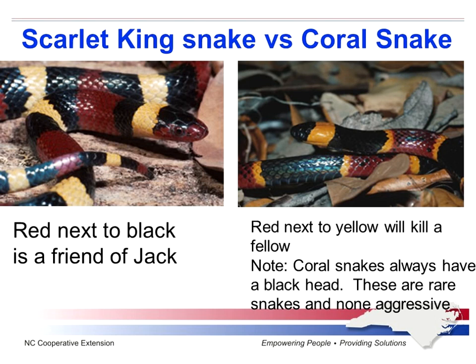We actually wouldn't want anyone to kill this snake, even though it will kill you. It's a very non-aggressive snake. Look at the coloration, because the kingsnake is mimicking the coral snake. If you look, you'll see that red bands are always next to black bands with the kingsnake. With the coral snake, red bands are always next to yellow bands. The other thing about the coral snake is the head is always going to be black.